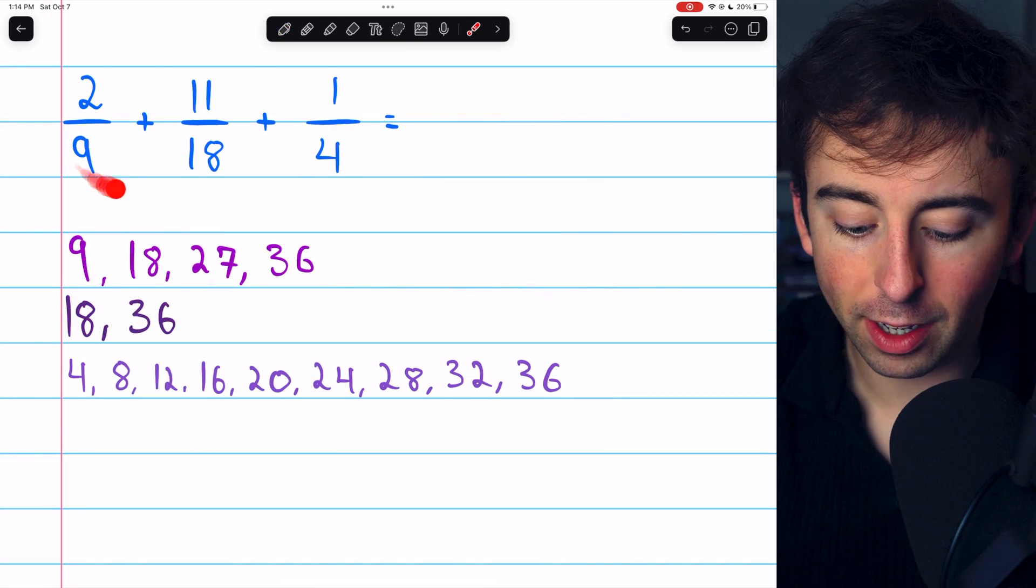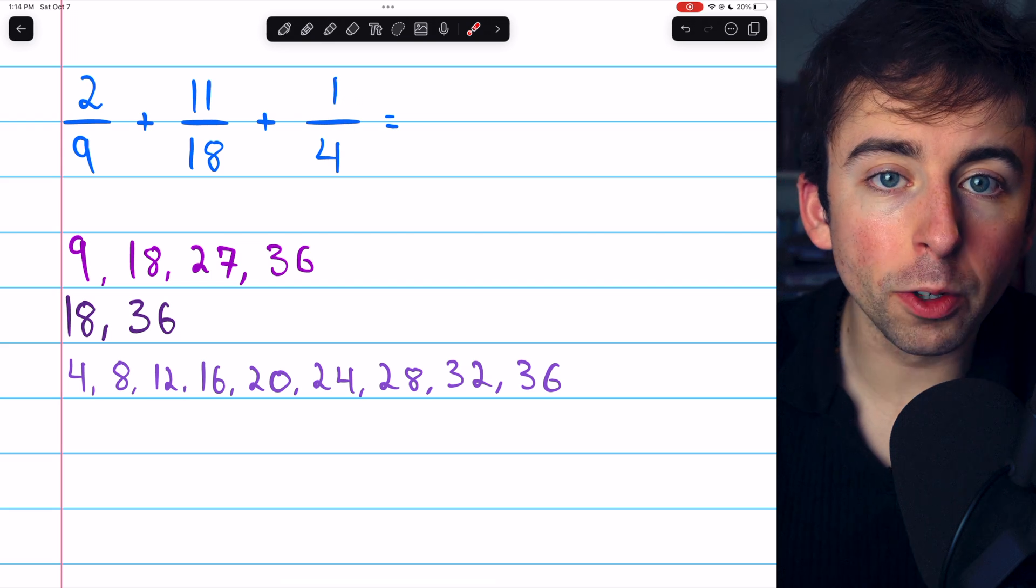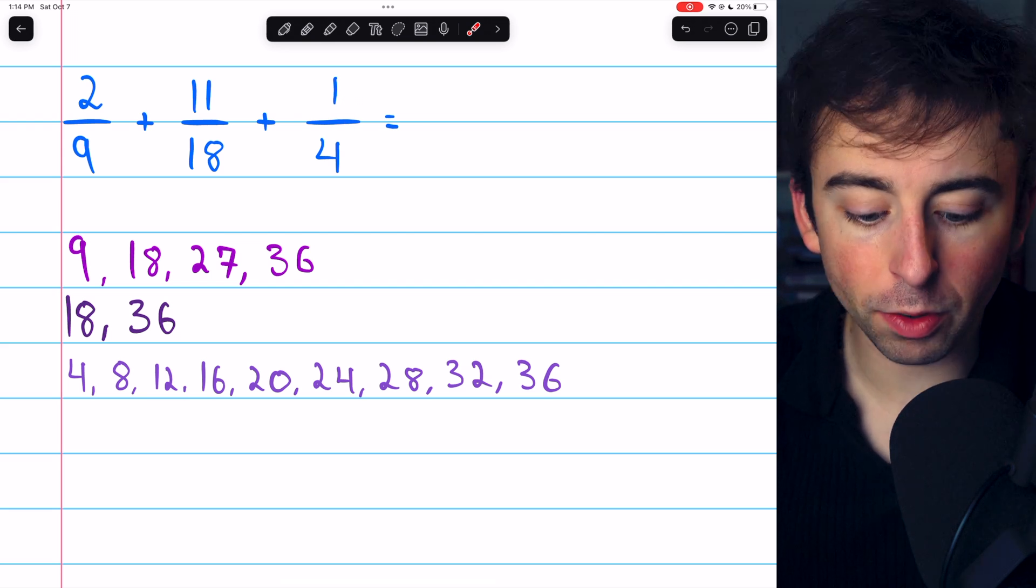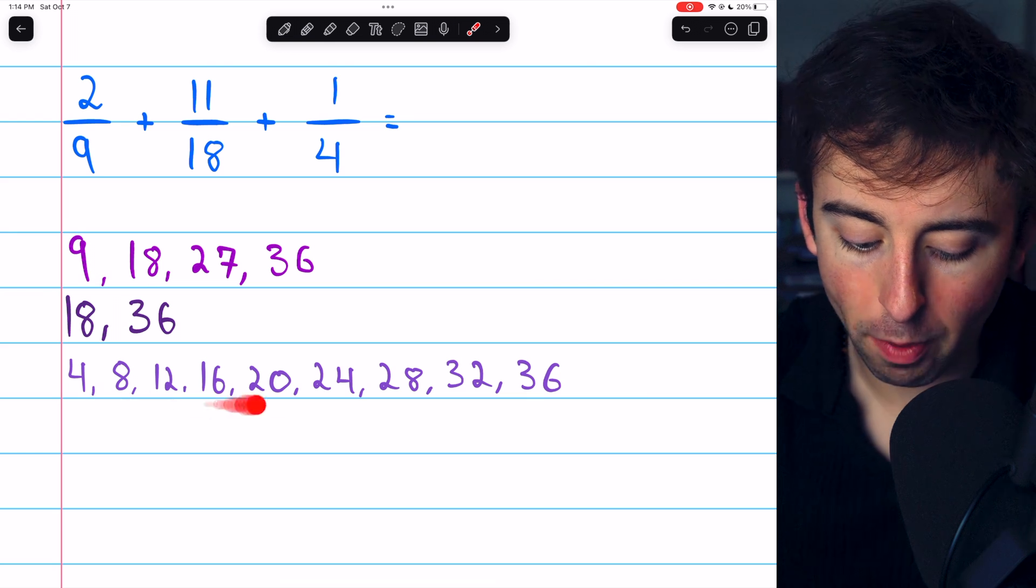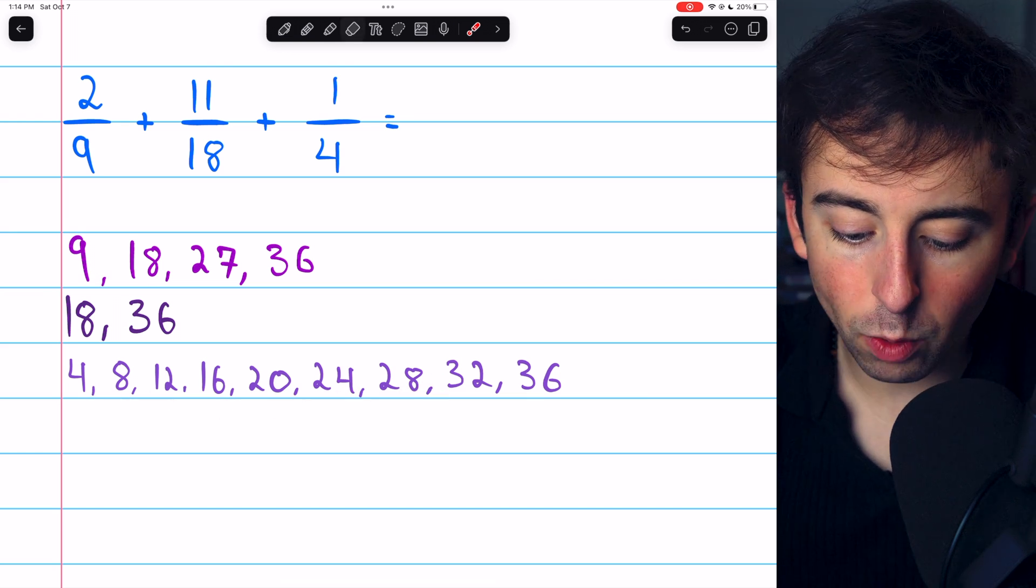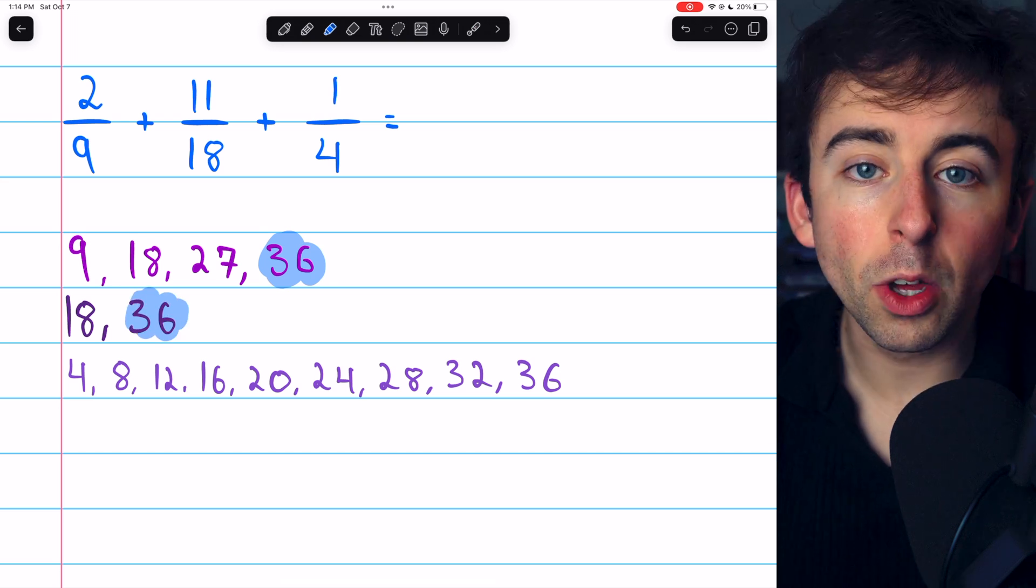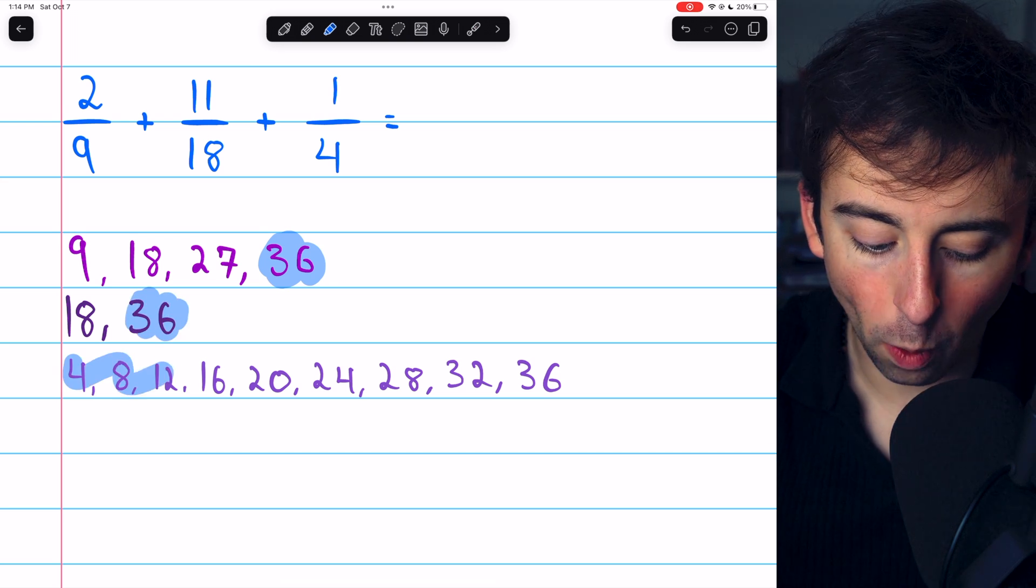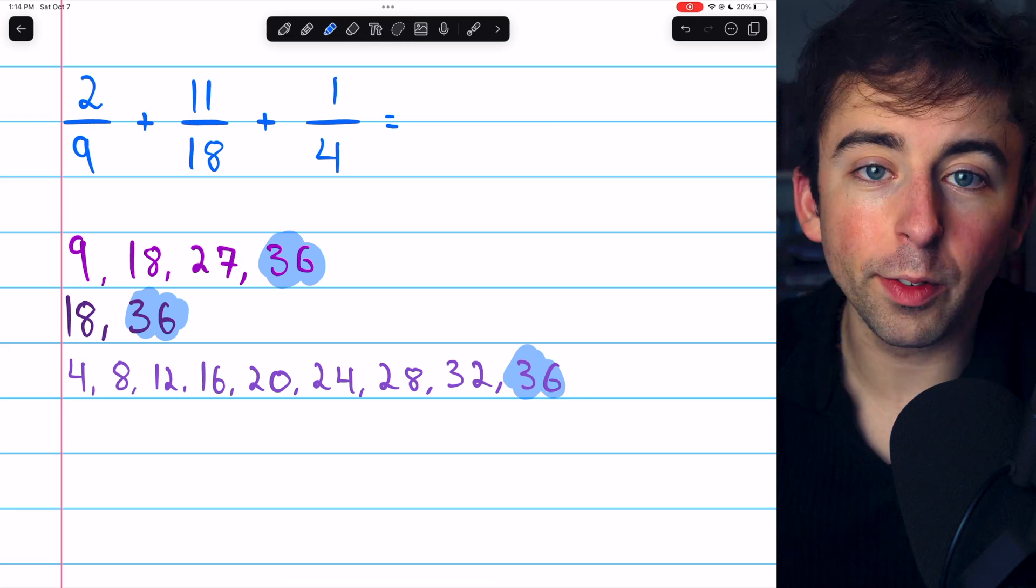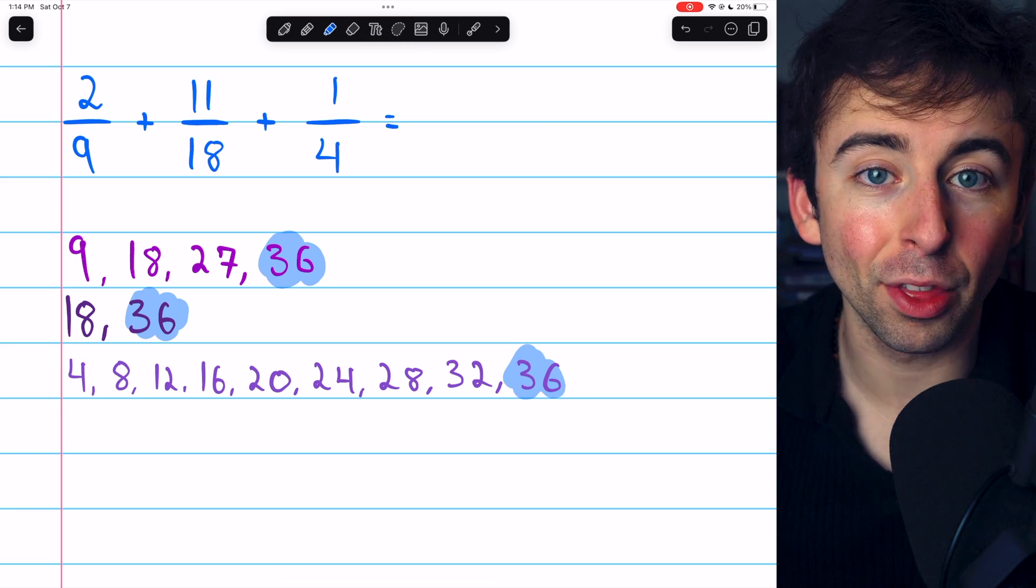Here is our second problem. And again, in order to find the least common multiple of the denominators, we could list out their multiples. If we do that, we would find that the least common multiple is 36. Though you can see in the case of 4, we have to write out quite a few multiples to get to 36.